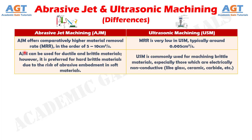Number 6: Abrasive jet machining can be used for ductile and brittle materials; however, it is preferred for hard brittle materials due to the risk of abrasive embedment in soft materials. Whereas, ultrasonic machining is commonly used for machining brittle materials, especially those which are electrically non-conductive, like glass, ceramic, carbide, etc.